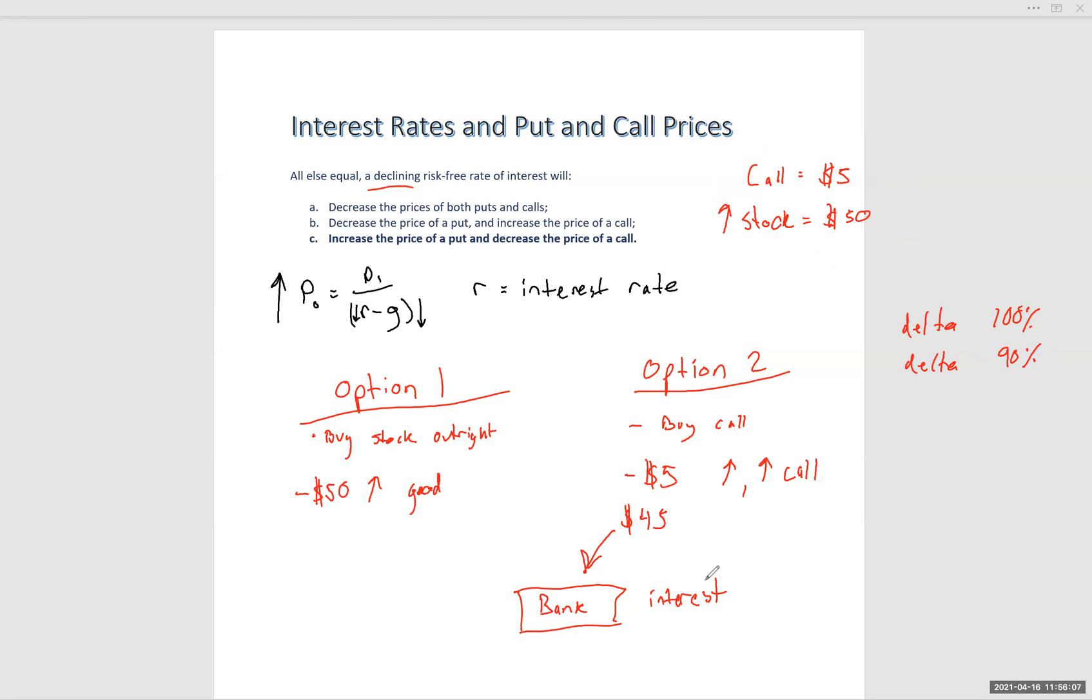But remember, we said that interest rates are declining. So you have this $45 that went into the bank. Now it's earning you interest, but your interest that you're earning is going down. So you're not able to do as much with this extra $45 that you saved. So it's not looking like the best choice necessarily.